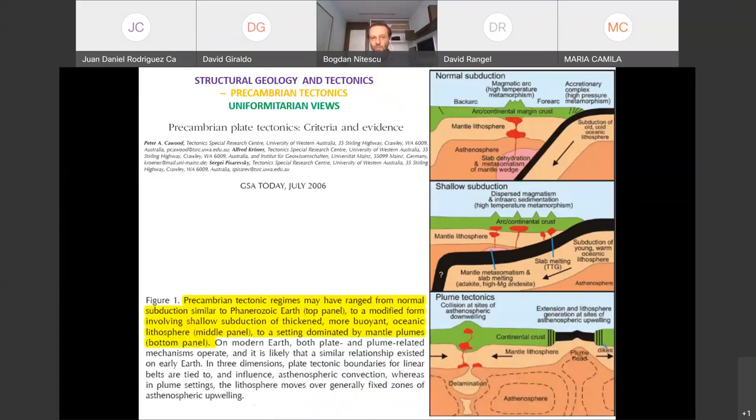Peter Cawood has to give process to his thinking. He says, 'What can we envisage here?' He shows three situations, three models: from normal plate tectonic processes that we see today, like normal subduction, going to something he calls shallow subduction, and going to something called plume tectonics. He says that in the Precambrian, you might have had all three of these situations, from normal subduction similar to what we see today to shallow subduction to mantle plumes.